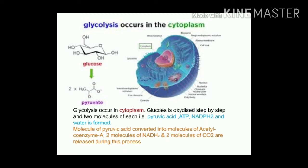In anaerobic respiration, glucose is oxidized in three steps — this is called glycolysis. A molecule of glucose is oxidized step by step in this process.